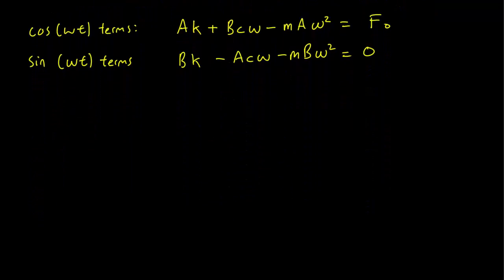We can rewrite these two equations in this form. So k minus m omega squared a plus c omega b equals f naught. And k minus m omega squared b minus c omega a equals 0.